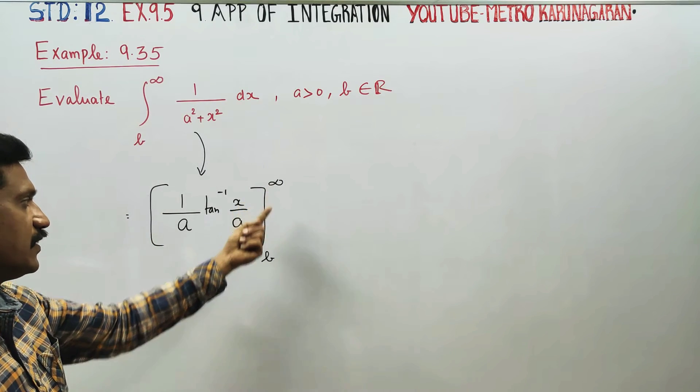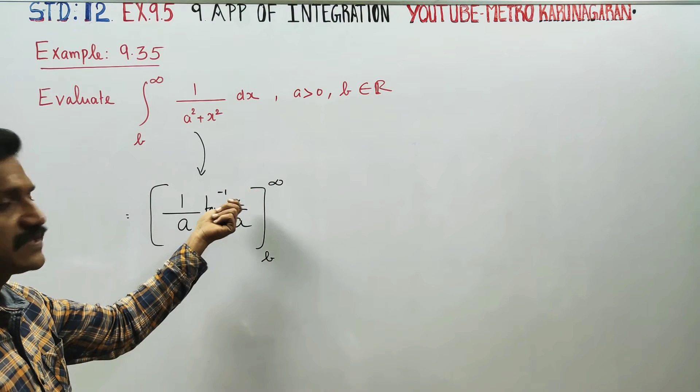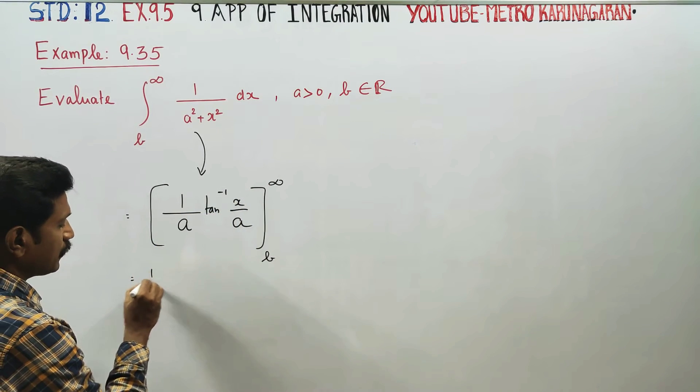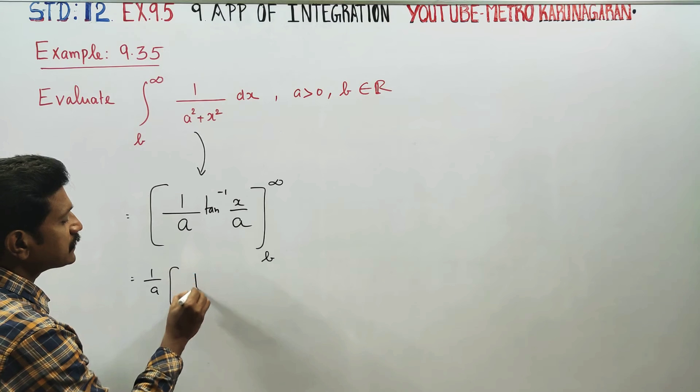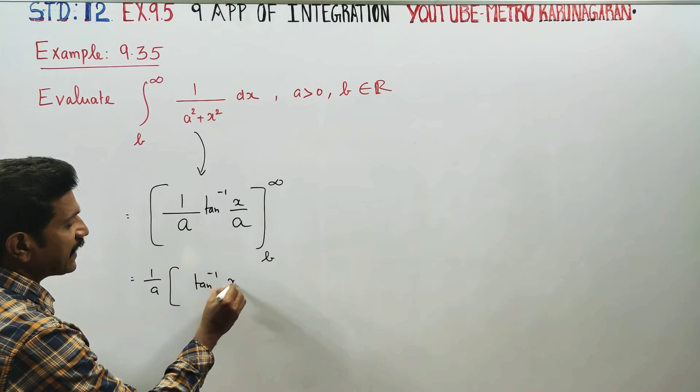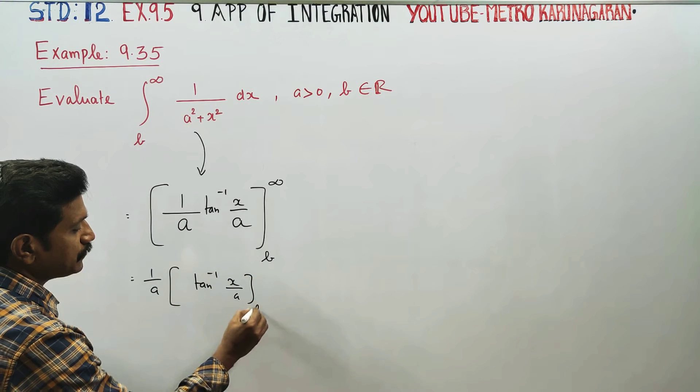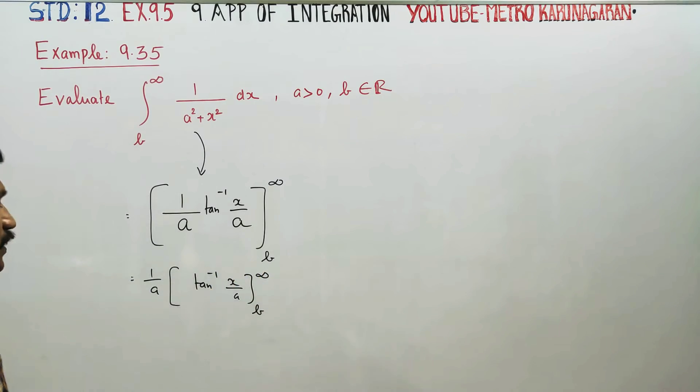Take 1/a outside. Now substitute the limits: tan inverse of x/a evaluated from b to infinity. This becomes 1/a times [tan inverse of x/a from b to infinity]. First upper limit minus lower limit.